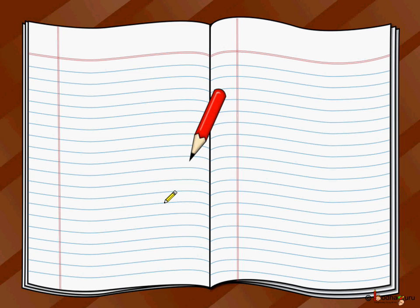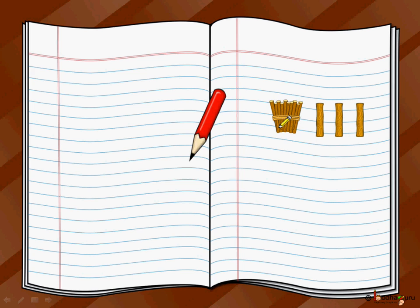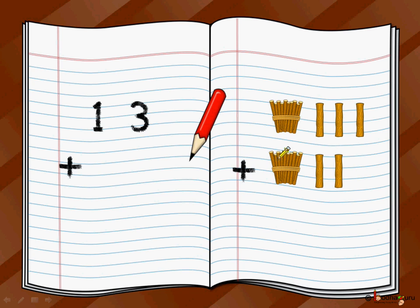Let's write two-digit numbers. Let's say we have 13 sticks — a bundle of 10 and 1, 2, 3 — that is 10 plus 3, which is 13 sticks. So how do we write 13? We write 1 and 3, which is 13.